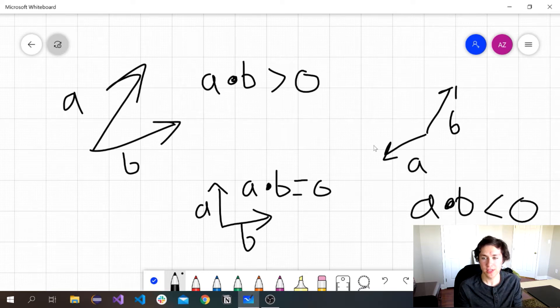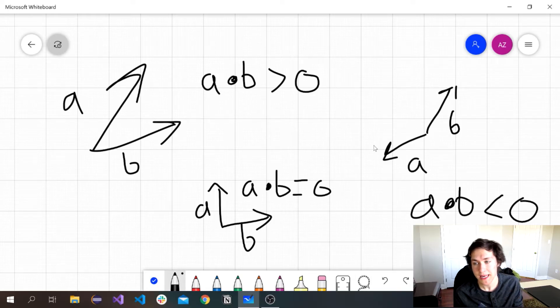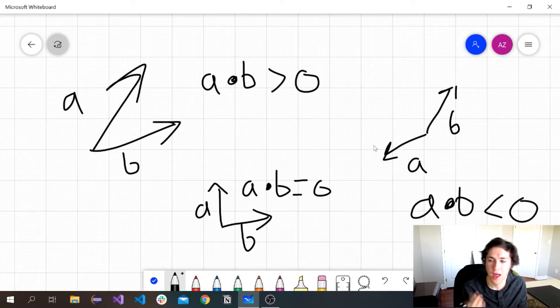If we look at it geometrically, if two vectors point in the same direction, their dot product is going to be positive. If they point in the opposite direction, their dot product is going to be negative because they have a negative similarity. If their dot product is zero, that shows they are perpendicular because there is no way for them to be similar at all.